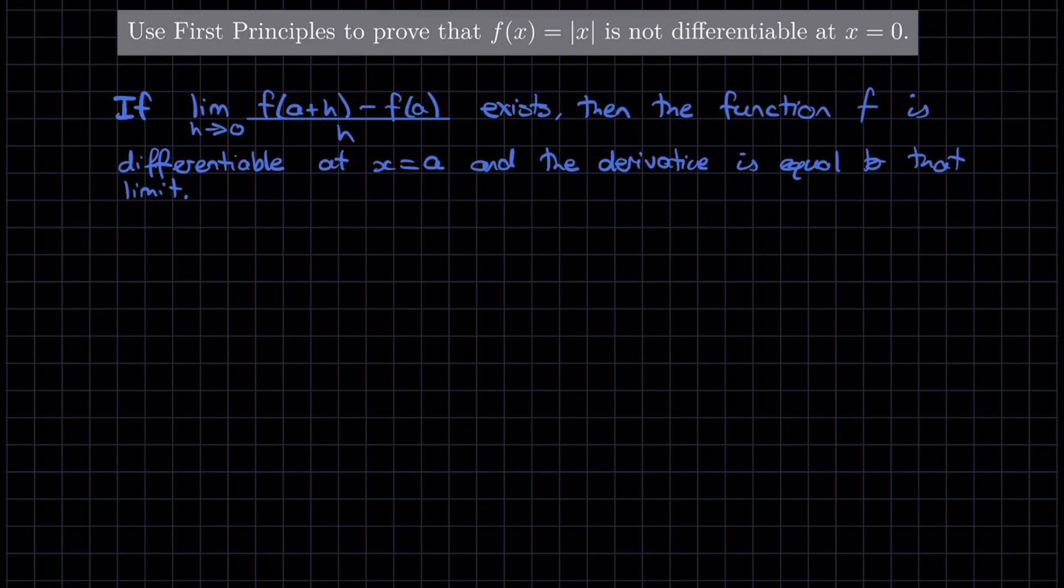So for us, we're trying to show that a function is not differentiable at x equal to 0. We're trying to show that f(x), which is the absolute value of x, is not differentiable at x equal to 0.